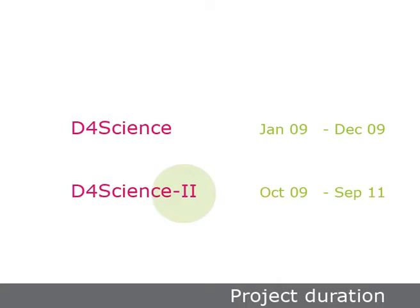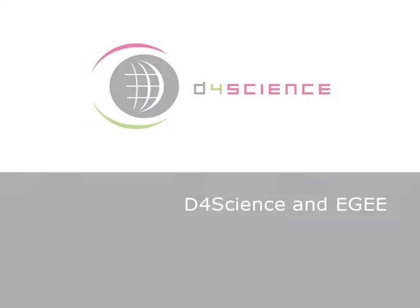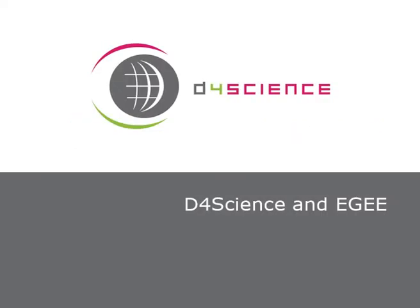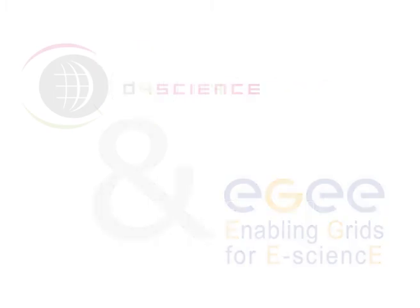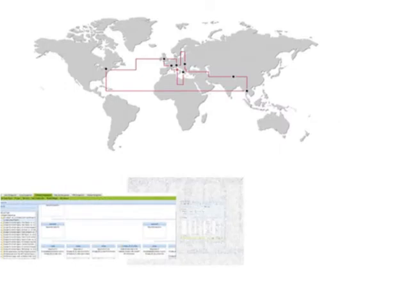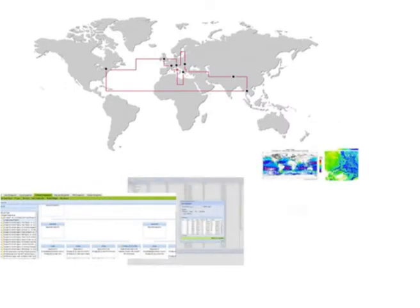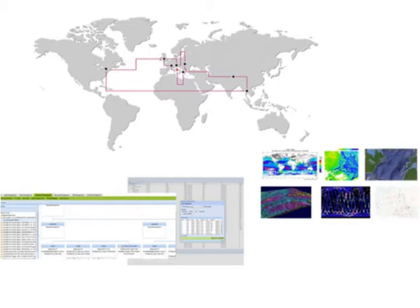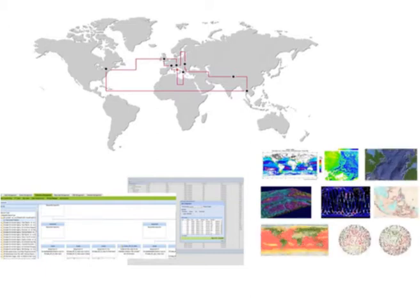A follow-up phase has already been approved and D4Science 2 will start in October of this year. D4Science uses the computational and storage capabilities offered by EEG to deliver a data infrastructure suitable for the generation, curation, and management of complex compound objects. This supports the interdisciplinary investigation of scientific questions across a wide range of user communities.